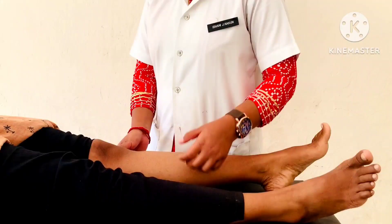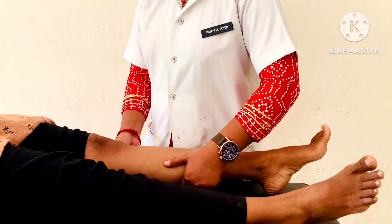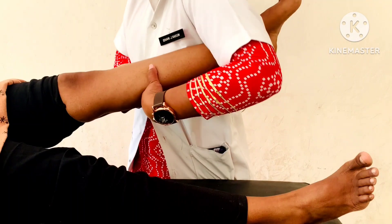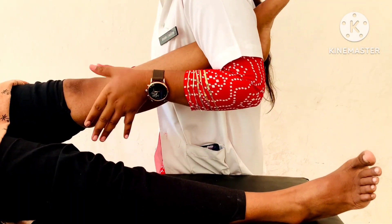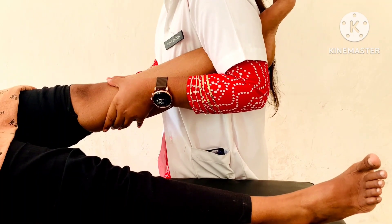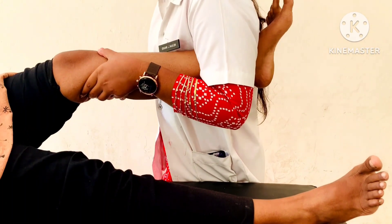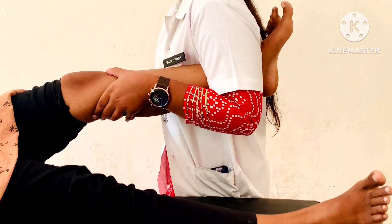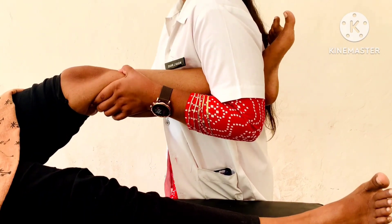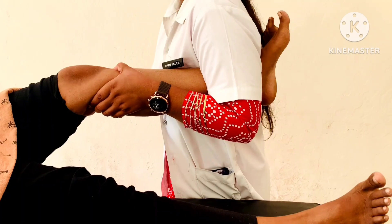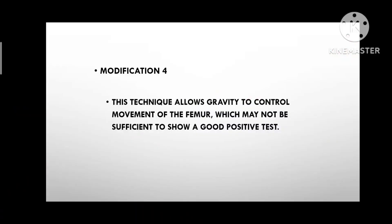Modification 4: Patient Position: supine lying while the examiner stabilizes the foot between the examiner's thorax and arm. Both hands are placed around the tibia and the knee is flexed 20 to 30 degrees and an anterior drawer movement is performed. This technique allows gravity to control movement of the femur, which may not be sufficient to show a good positive test.